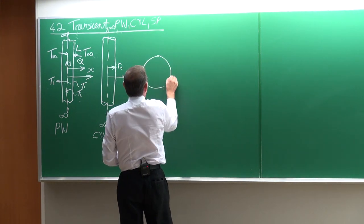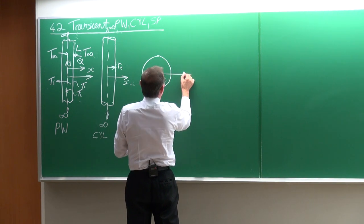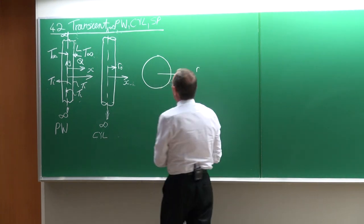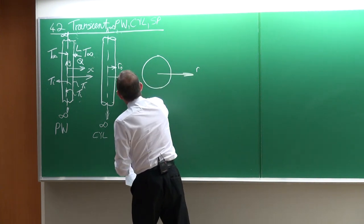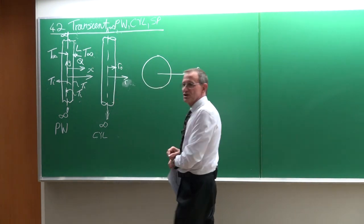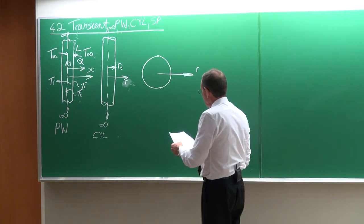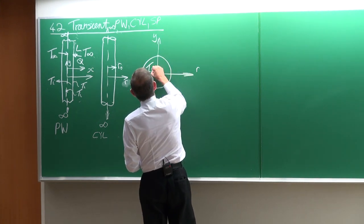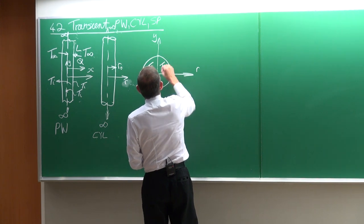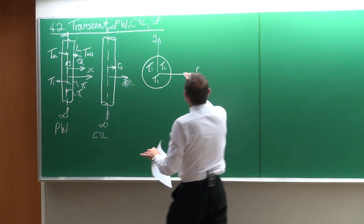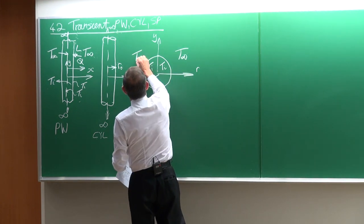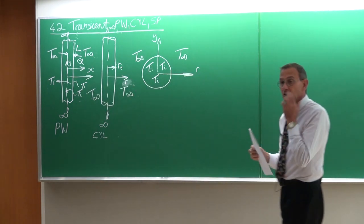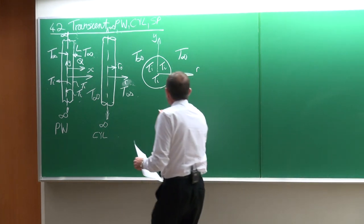The third geometry is a sphere — like a cricket ball or a ball bearing. Here we choose the coordinate system as R. We can consider it as an R in the coordinate system. Again, the temperature everywhere is going to be at an initial temperature Ti. The environment temperature is going to change to T-infinity, and T-infinity can be lower or higher than the temperature of the body.